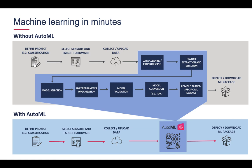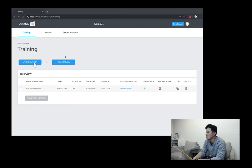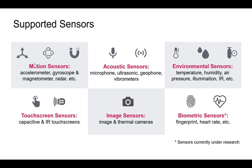As you can see, this is something we automatically build in just under five minutes, and it performs very well. The Kixo AutoML supports various sensors, including motion sensors, acoustic sensors, environmental sensors, touchscreen sensors, image sensors, and biometric sensors.